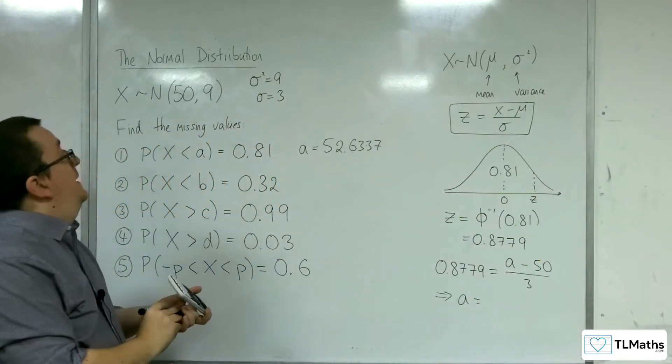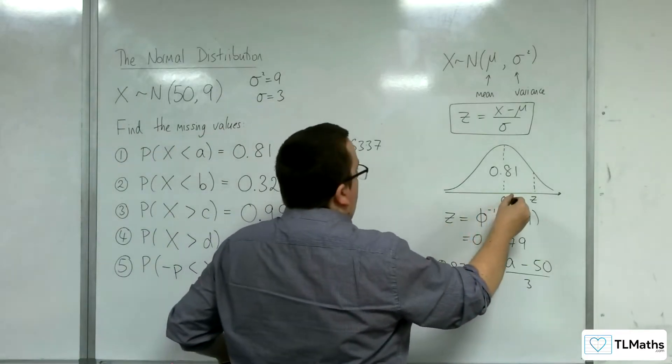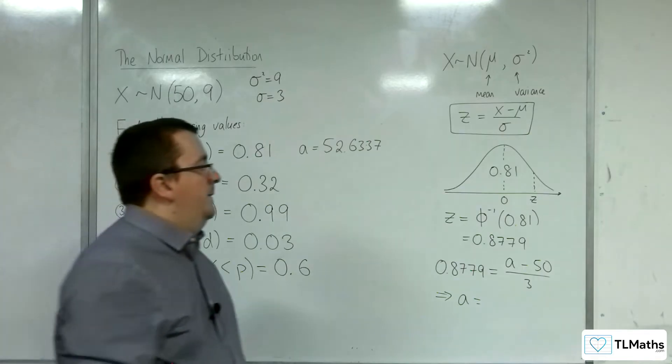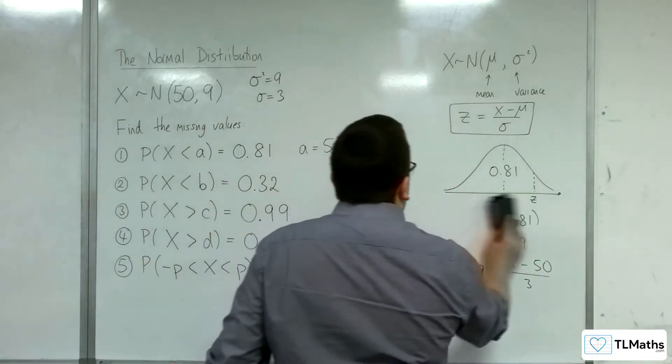Now, does that make sense? Well, if that was 50, now it's 52.6337. That makes sense that it's to the right.